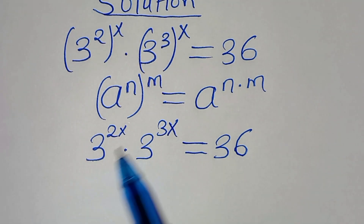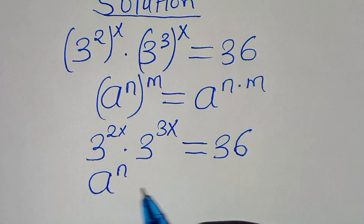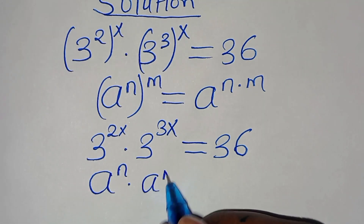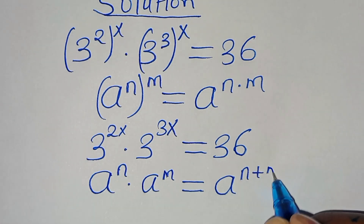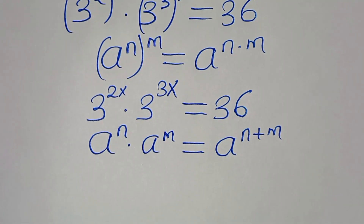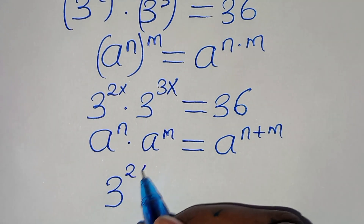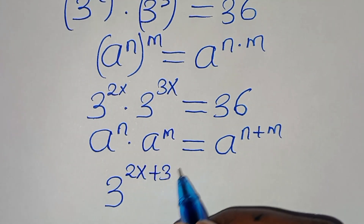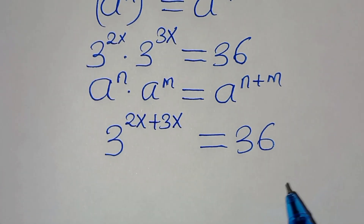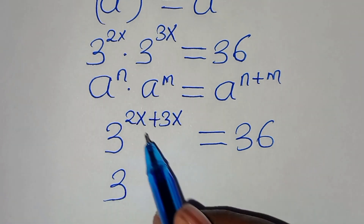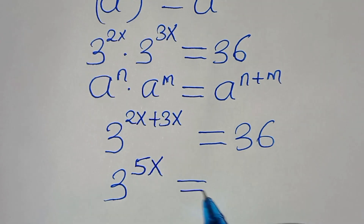Next, 3 to the power of 2x times 3 to the power of 3x is in the form of a^n times a^m, which we can express as a^(n+m). Applying this exponent property, we have 3 to the power of 2x plus 3x, which is 5x, equal to 36.